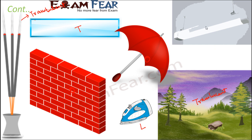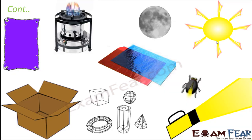A lighted fluorescent tube is an object which produces its own light, so it is luminous. A sheet of carbon paper is definitely opaque because light cannot pass through it. The flame of a gas burner is luminous because it produces its own light. Wire mesh is transparent — you can see objects on the other side — and it is non-luminous as it produces no light of its own.